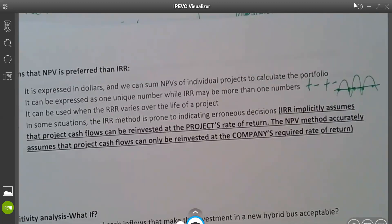Third one is sometimes the RRR changes, because we said capital budgeting spends many, many years, like 10 years. So sometimes the bank requires 10%, maybe next year requires 12%. So if you have a different RRR, then you just need to use that new RRR to calculate NPV, but you cannot do that when you have the IRR.